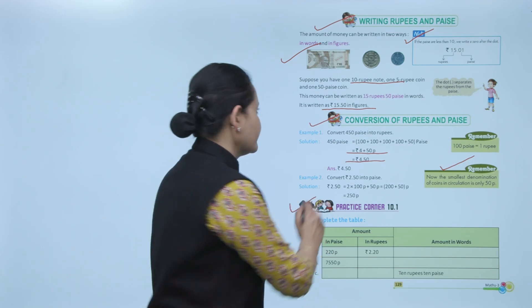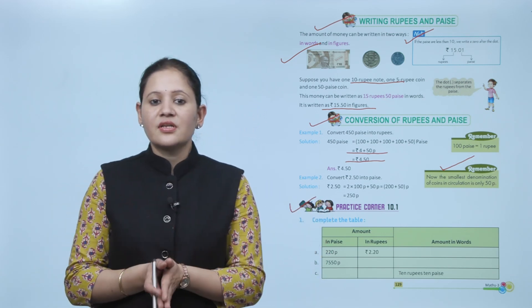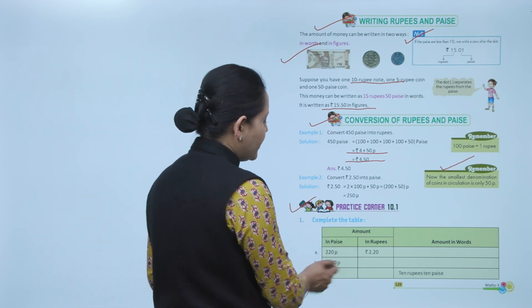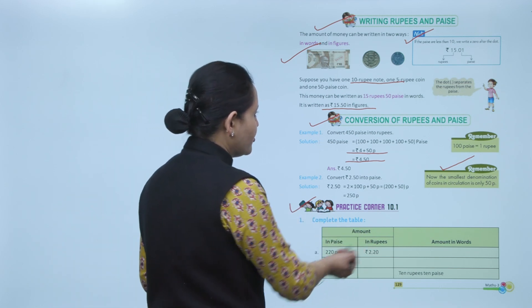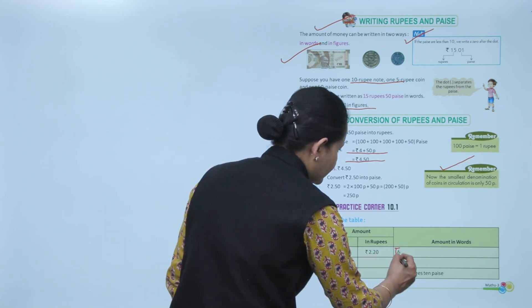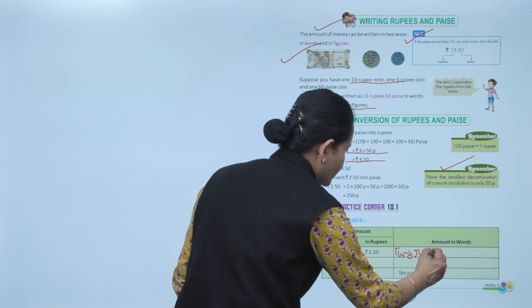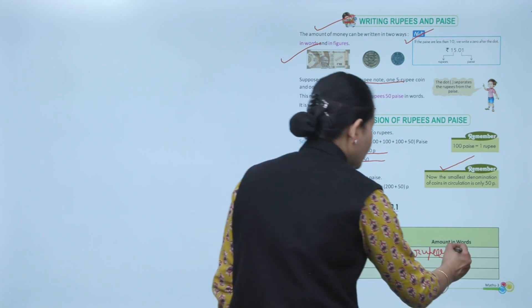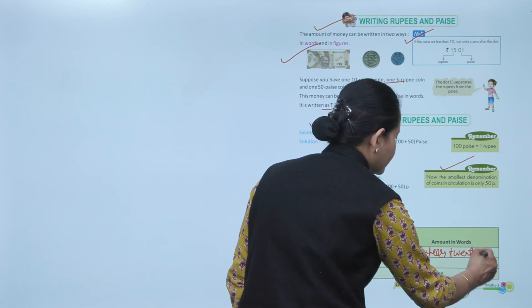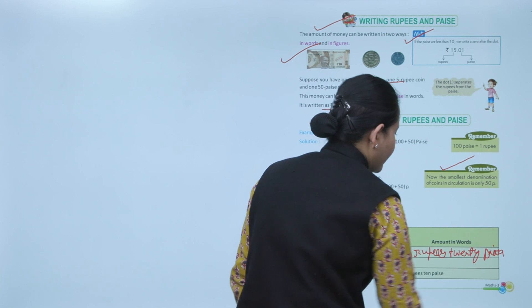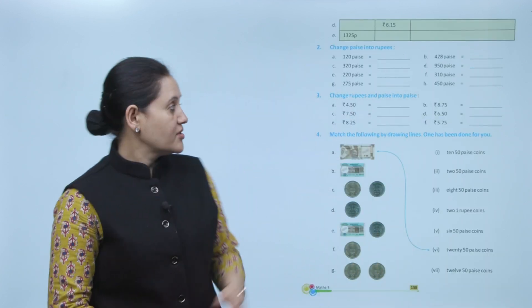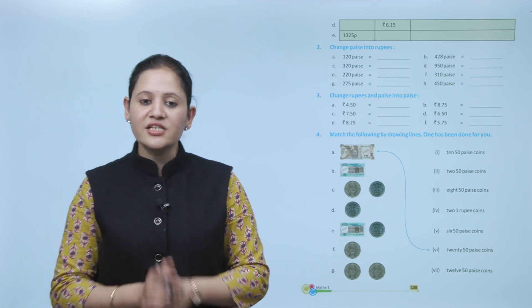Practice corner 10.1: Complete the table. Amount is in paisa — 220 paisa in rupees will be written as rupees 2.20, that is 2 rupees 20 paisa. You have to practice all these questions, then we'll move to the next topic.